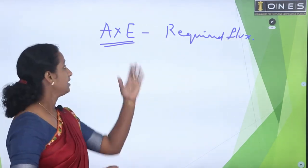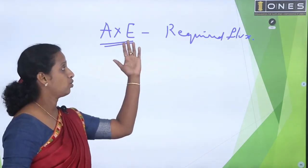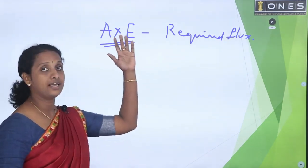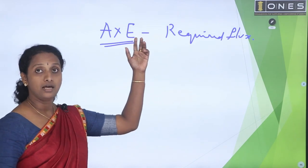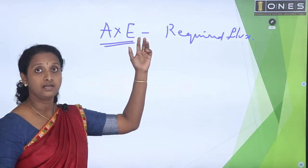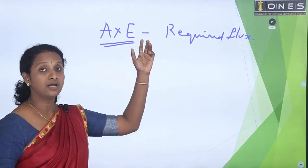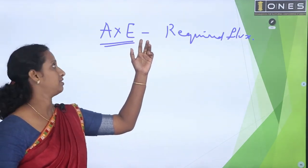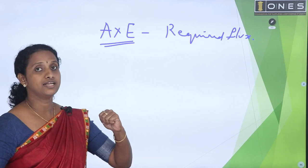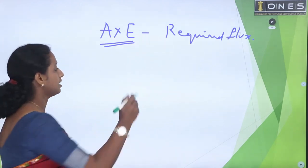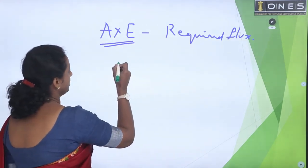The required flux — area E — is in lumens per meter square. That is the equation for producing the required luminous flux.